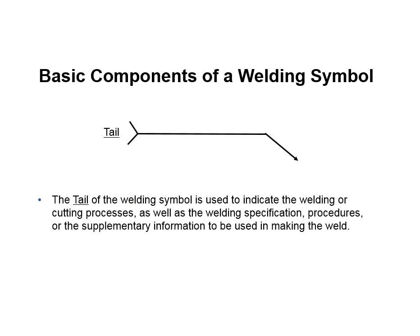The tail of a welding symbol is used to indicate welding or cutting processes, as well as welding specification procedures or supplementary information. If you have a very specific amount of information you want relayed to the foreman and welder doing the work, put it in the tail. Sometimes it's easier to just tell them exactly what you want — for example, 'See note 52' or 'Use welding procedure 53-29 GMAW 7.' You can give them that specific procedural information directly in the tail.